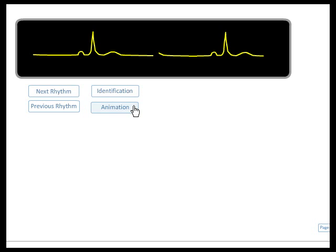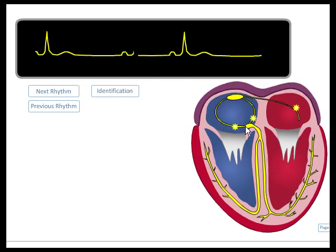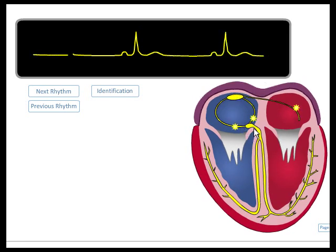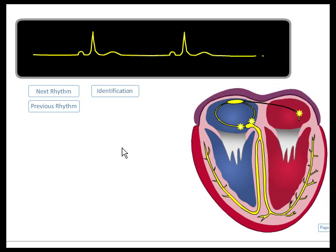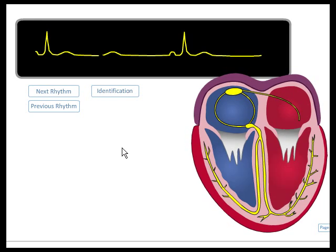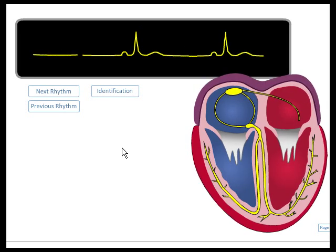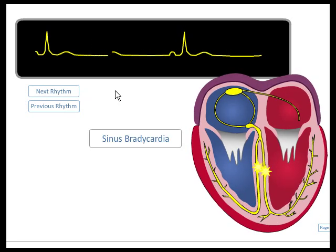If we look at the animation of this rhythm, we would see the SA node fire, the impulse travel down the intra-atrial tracks, the AV node delay the impulse, and the Purkinje fibers transmit the impulse down through the ventricles, causing rapid ventricular depolarization and contraction. This is just like regular sinus rhythm, but the rate is below 60. This is sinus bradycardia.